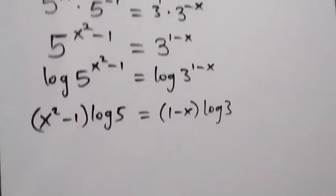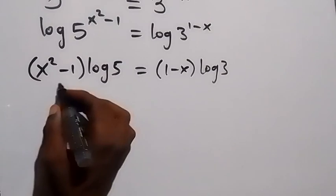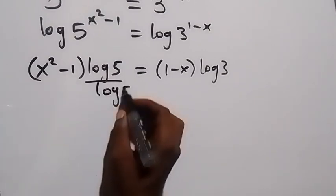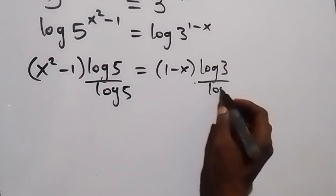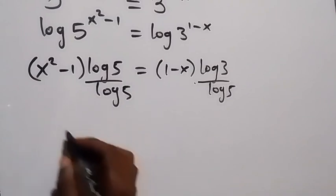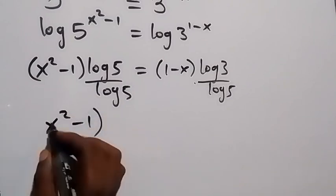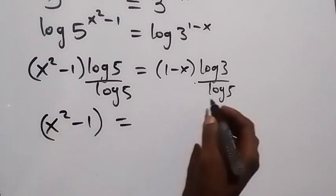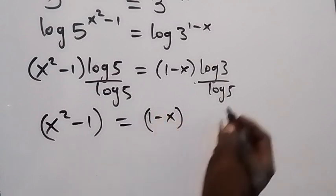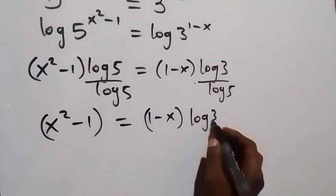Let's divide both sides by log 5. The log 5 terms cancel, leaving simply x squared minus 1, which is equal to (1 minus x) times log 3 to base 5, applying the change of base.